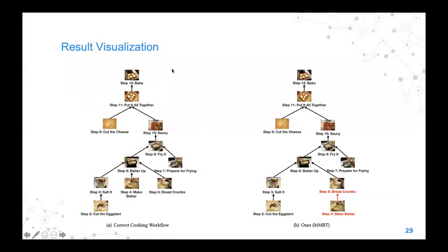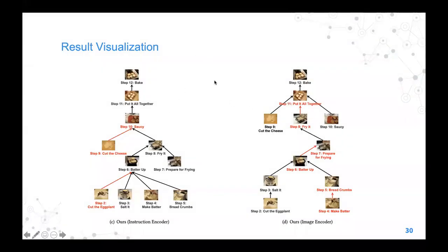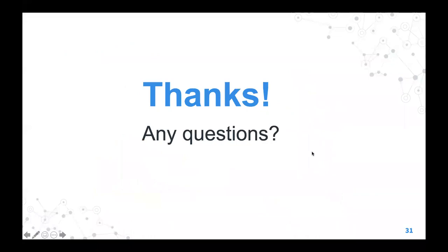Finally, here are some result visualizations. On the left it shows the cooking workflow annotated by a human, and on the right it shows the predictions of our model — you can see it only makes one mistake. We also show model predictions for two baselines: one using only text instructions and one using only visual features. We find that using only visual features tends to make more mistakes. That's all for this work. Thanks.